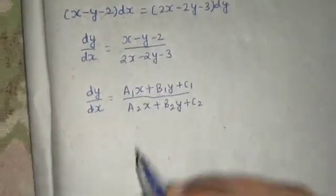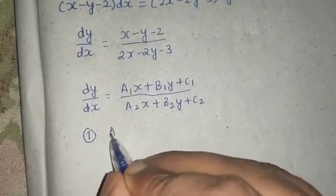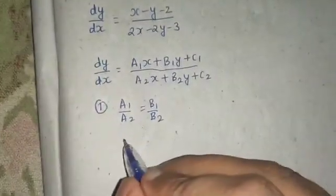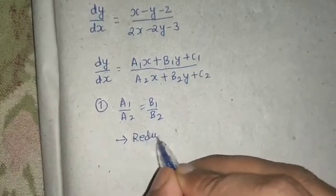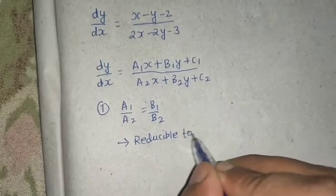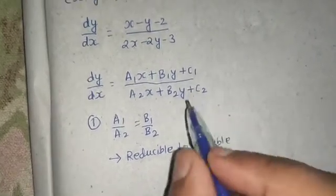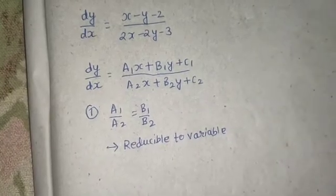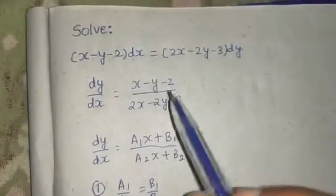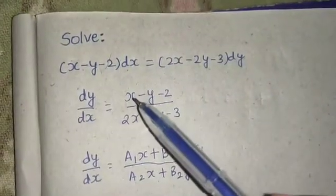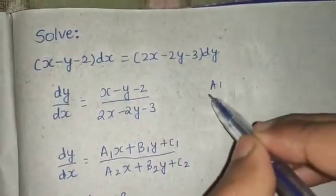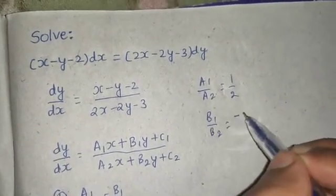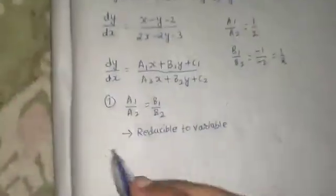Now for this type of problem there are two cases. Case 1 is where a1/a2 equals b1/b2. In that case, it is reducible to variable separable. We identify the common term from numerator and denominator, substitute that as t, differentiate, put it in the equation and solve. This question belongs to Case 1, as you can see: a1/a2, the coefficient of x, is 1/2, and the coefficient of y is minus 1 over minus 2, which is also 1/2.